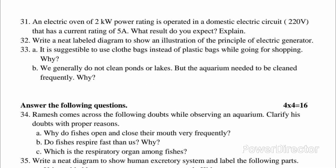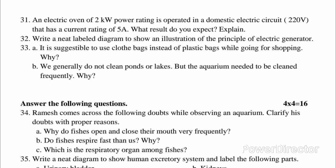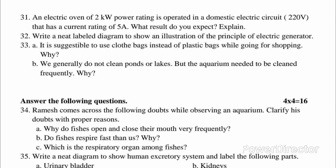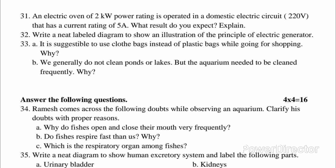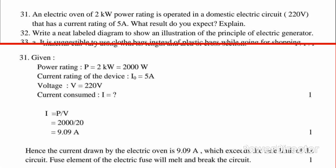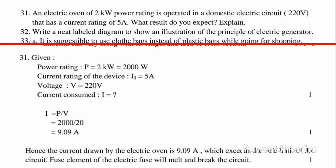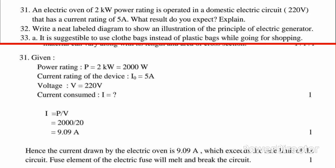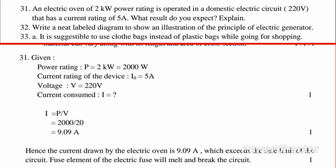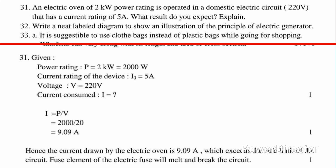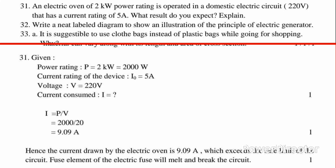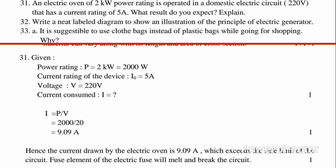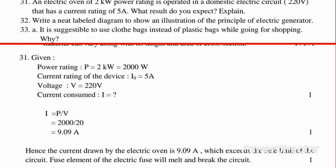Question 31: An electric oven of 2 kW power rating is operated in a domestic electric circuit of 220V with a 10A current rating. What result do you expect? Given: Power rating P = 2 kW = 2000W. Current rating I₀ = 5A. Voltage V = 220V. Current consumed I = P/V = 2000/220 = 9.09A. Hence, the current drawn by the electric oven is 9.09A, which exceeds the safe limit. The fuse element will melt and break the circuit.